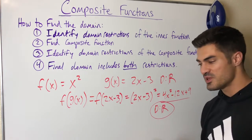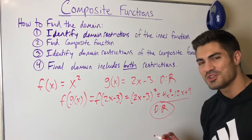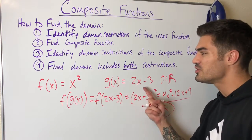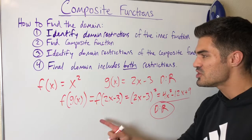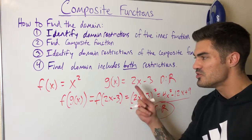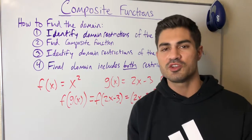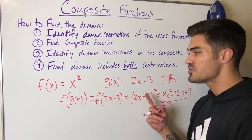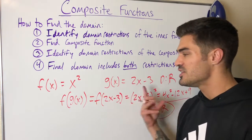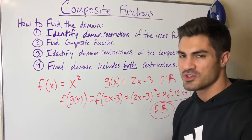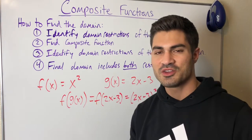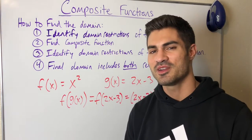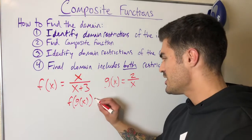The reason I started with this example is because it's the simplest case — we have two functions that both have a domain of all real numbers, so any composite function made from these two will also have a domain of all real numbers. In general, if you have polynomials, quadratics, or linear functions and you're composing them, the domain will be all real numbers. It's other cases where we have problems.